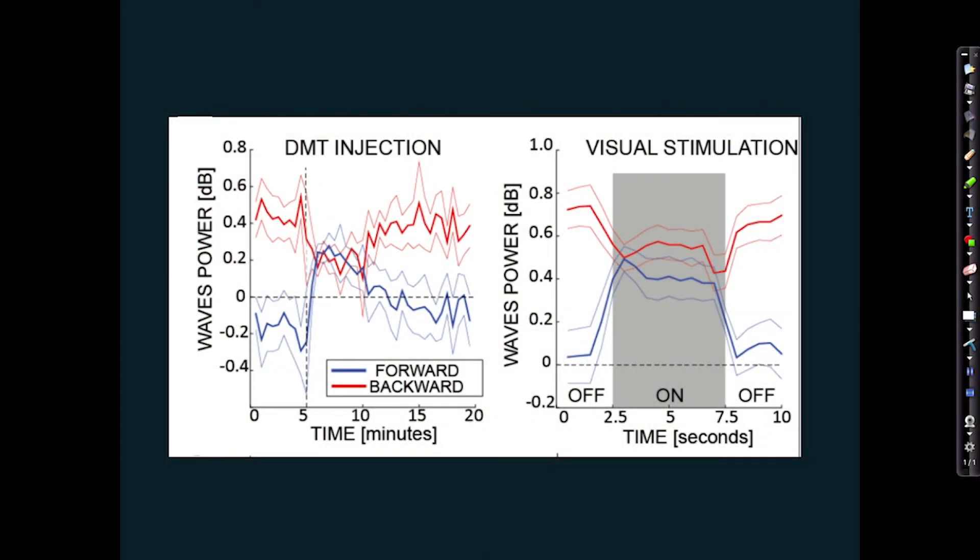What they actually did in this study was to test this idea: give one of the subjects actual visual stimulation — someone not on the drug — through their eyes, and look at the change in the power of these backward and forward traveling waves over time. Then compare that with the DMT state where subjects don't receive visual stimulation, to see if the two conditions look similar.